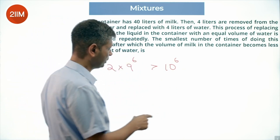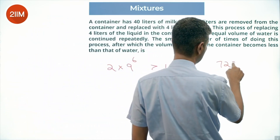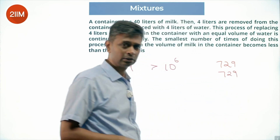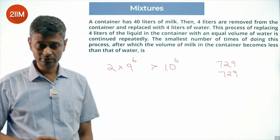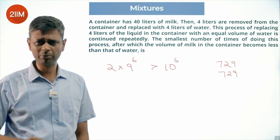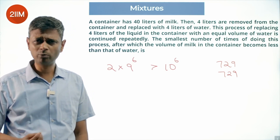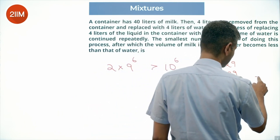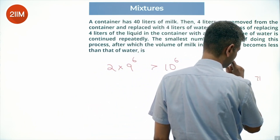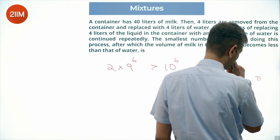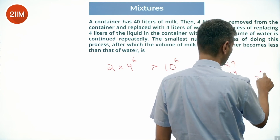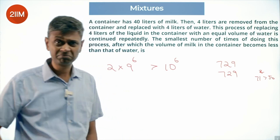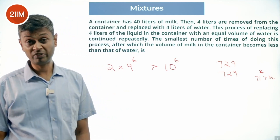9^6 is 729 × 729. 7 × 7 is 49, and 7.1 × 7.9 will be more — 71 squared will be more than 50. So 6 won't work; maybe 7 will work.